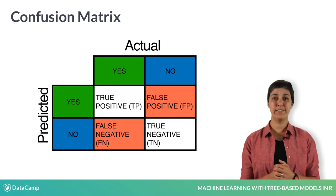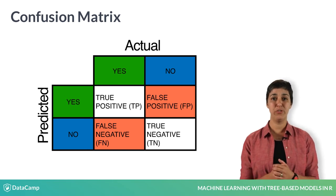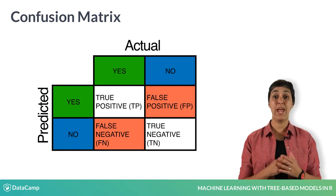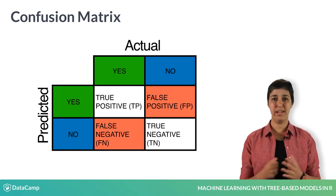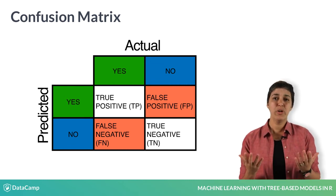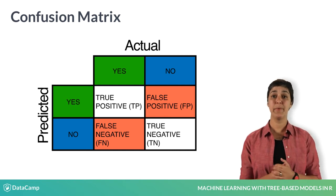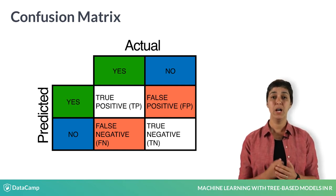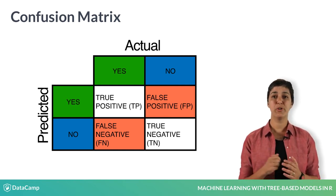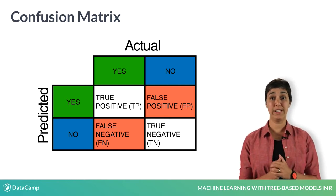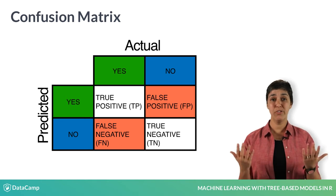Although these examples have used a two-by-two confusion matrix, the same concept can be extended to any number of classes. So you can have a three-by-three confusion matrix for a three-class model, a four-by-four confusion matrix for a four-class model, and so on.